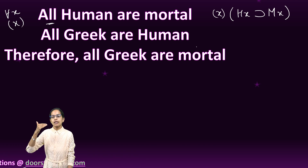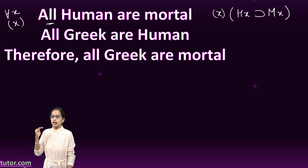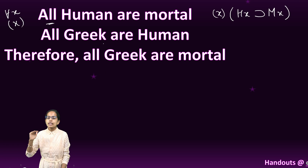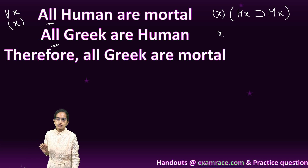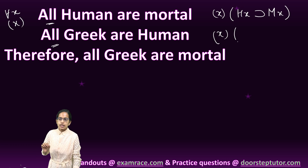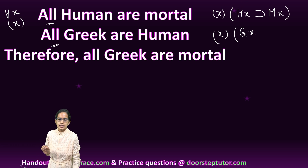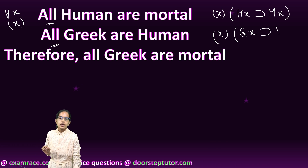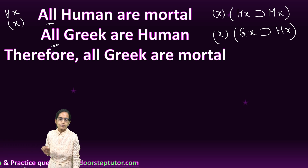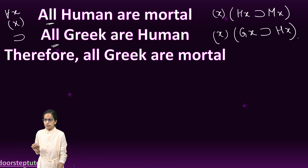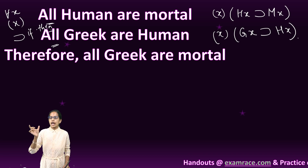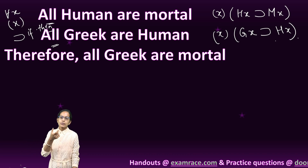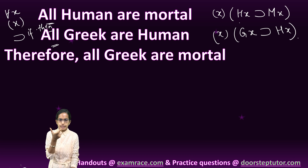My second formula comes from 'all Greeks are human'. So again using 'for all', I write it as: for all x, if x is Greek, then x is human. The horseshoe sign that we use here indicates 'if...then', as we have understood in our well-formed formula logic classes.